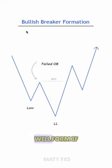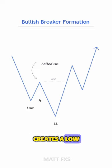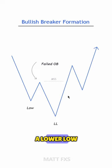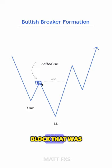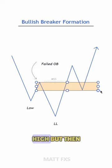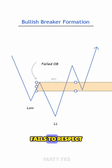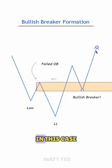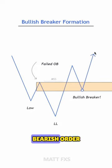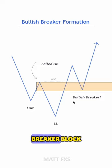A bullish breaker will form if the price action creates a low, a high, followed by a lower low, and then reverses back towards a bearish order block that was around the last high but then fails to respect it and pushes past it. In this case, we can mark out that failed bearish order block as it's now our bullish breaker block.